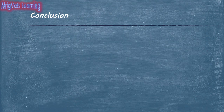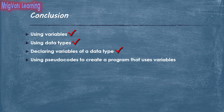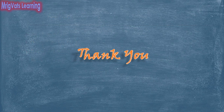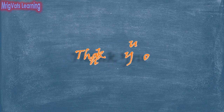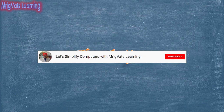In this video, you learned about using variables, using data types, declaring variables of a data type, and using pseudocodes to create a program that uses variables. In the next video, you will learn about different types of operators. Thank you for watching. I hope you enjoyed this video as much as I enjoyed creating it. If so, do not forget to like this video and subscribe to my channel. Let's simplify computers with Mrigvets Learning.